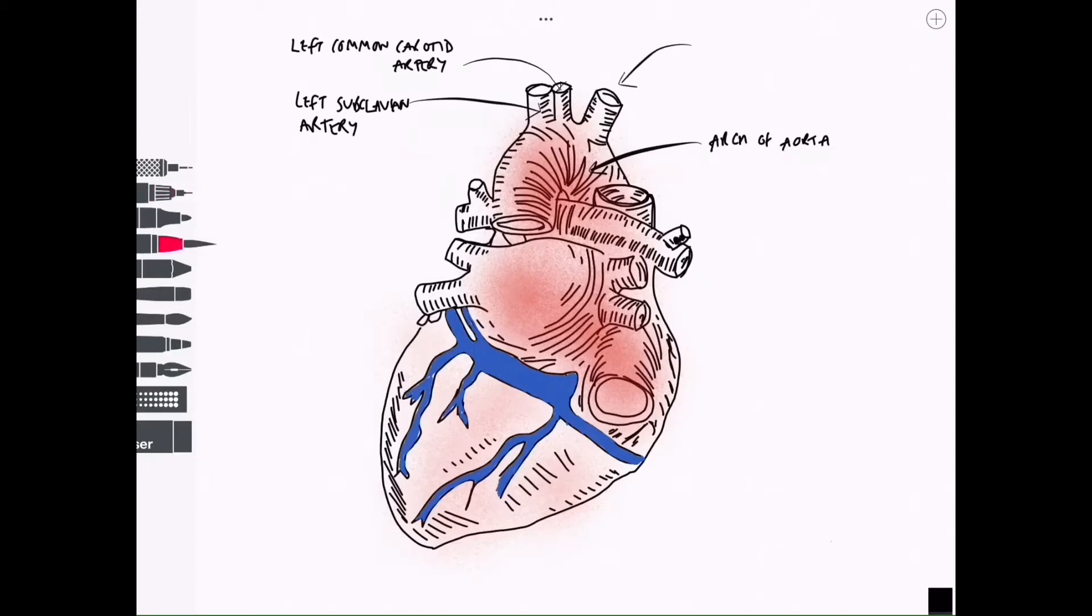The first branch coming off the aorta as seen from an anterior view would of course be the brachiocephalic trunk. This goes to the right hand side and splits, and then we have the superior vena cava which we can see quite clearly.